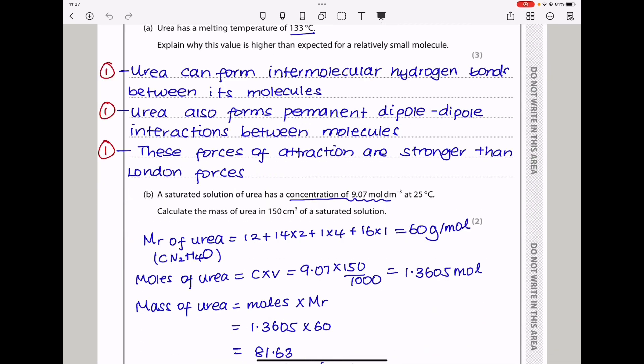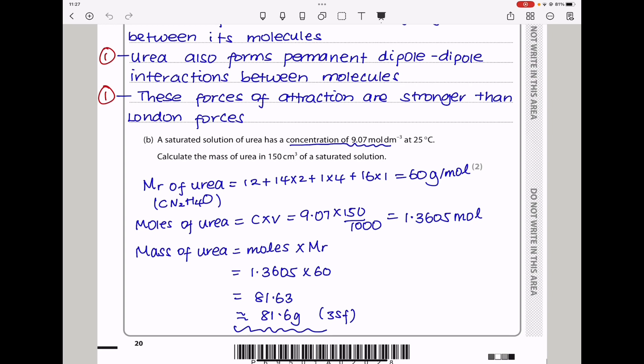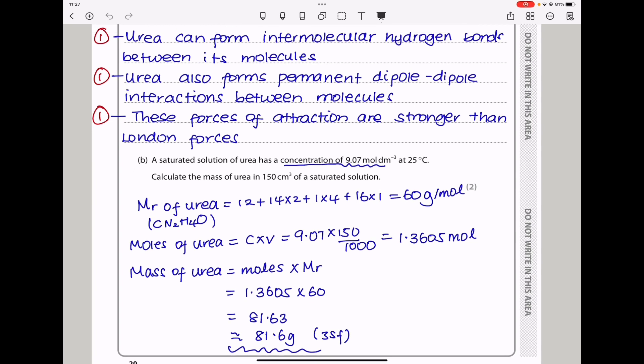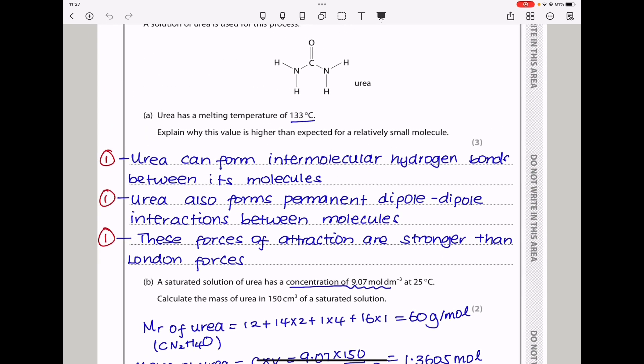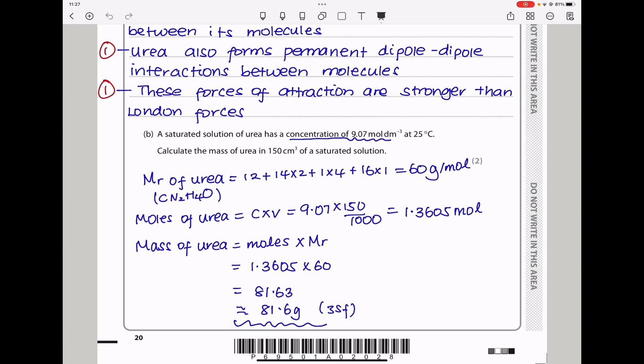Down here they say, a saturated solution of urea has a concentration of 9.07 mol per decimeter cubed at 25 degrees. Calculate the mass of urea in 150 centimeters cubed of saturated solution. I need to first find the molar mass of urea. And as you can see, this structure has one carbon, two nitrogens, four hydrogens, and one oxygen. So the molecular mass is going to be calculated like that. And I got 60 gram per mole.